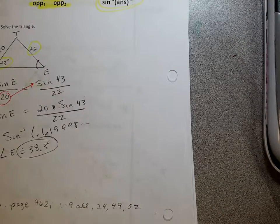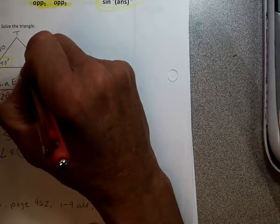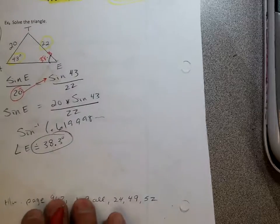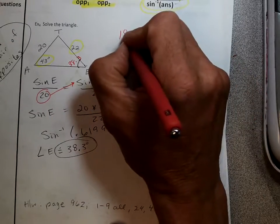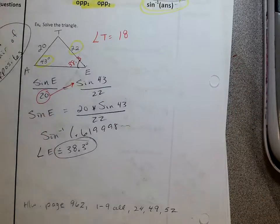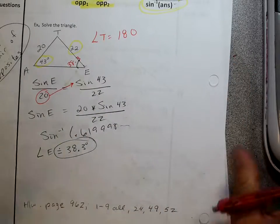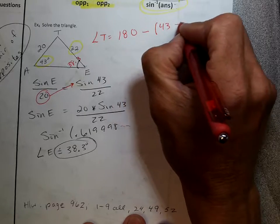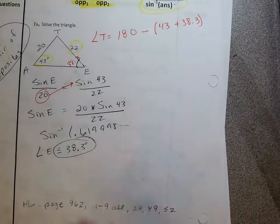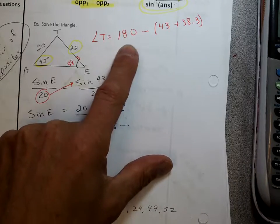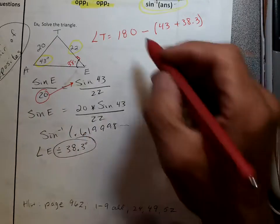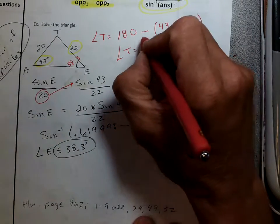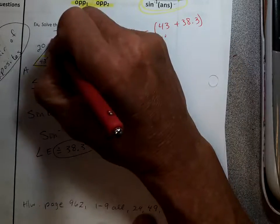Now let's finish this up. I know angle E is 38.3. What would you find next? You can find angle T. All three angles add up to 180. So: angle T equals 180 minus (43 plus 38.3), and I get an answer of about 98.7. So angle T is about 98.7 degrees.